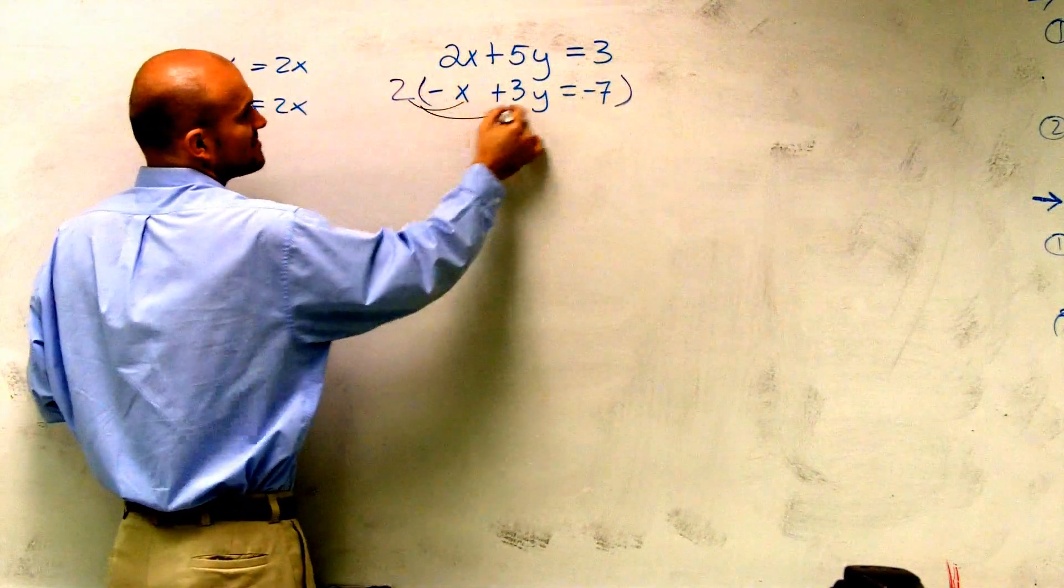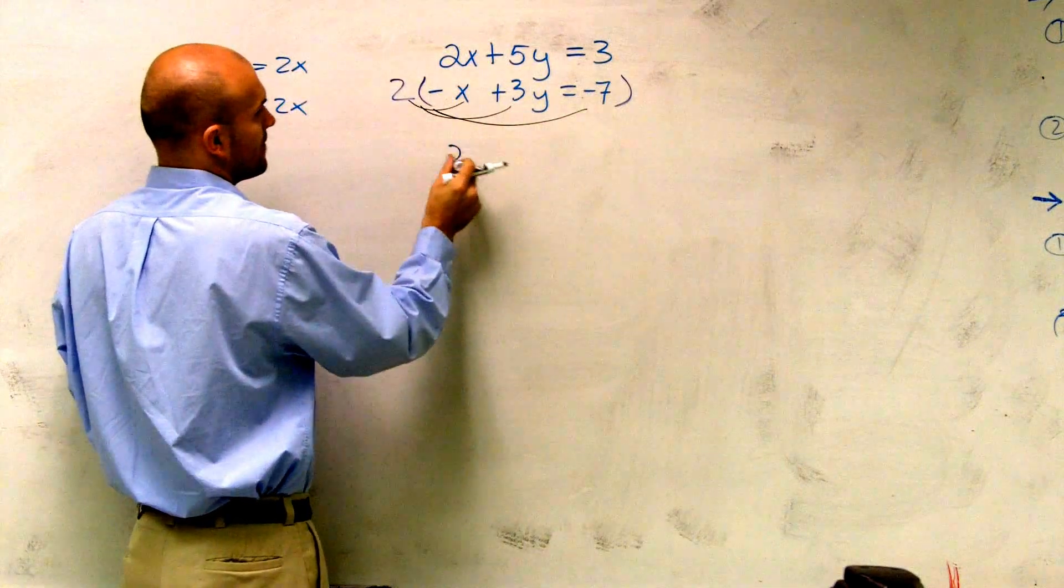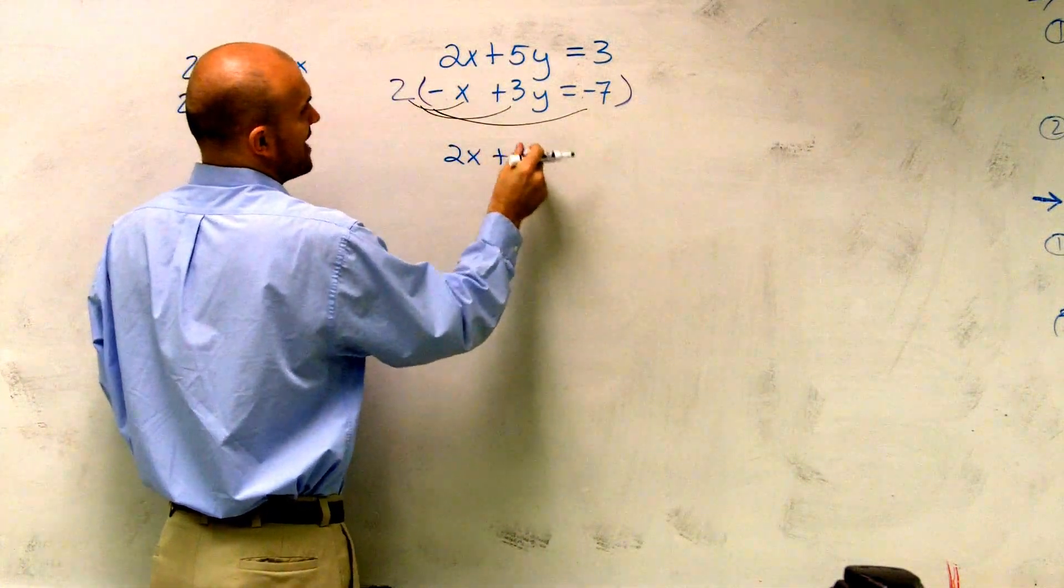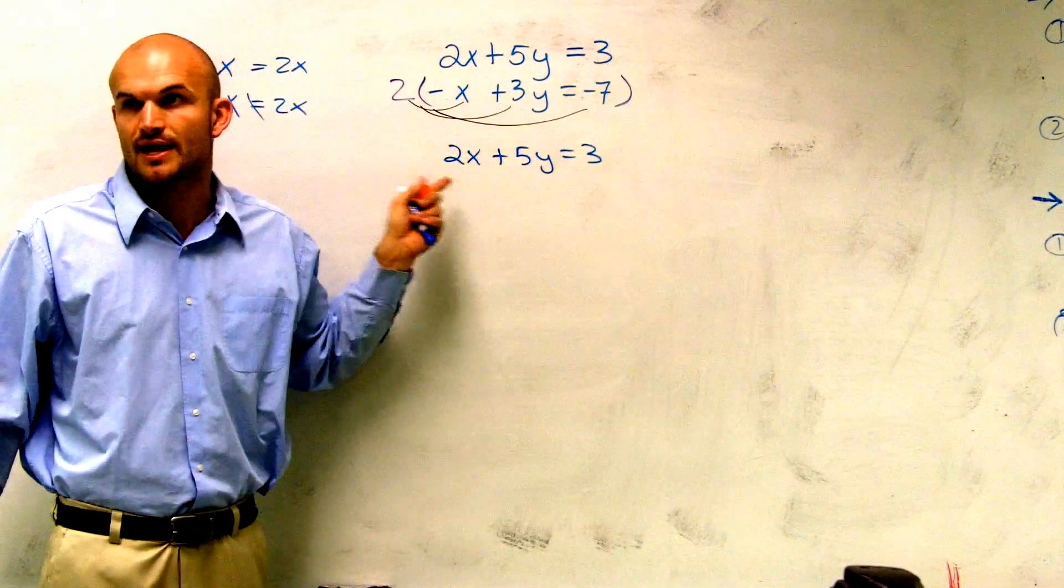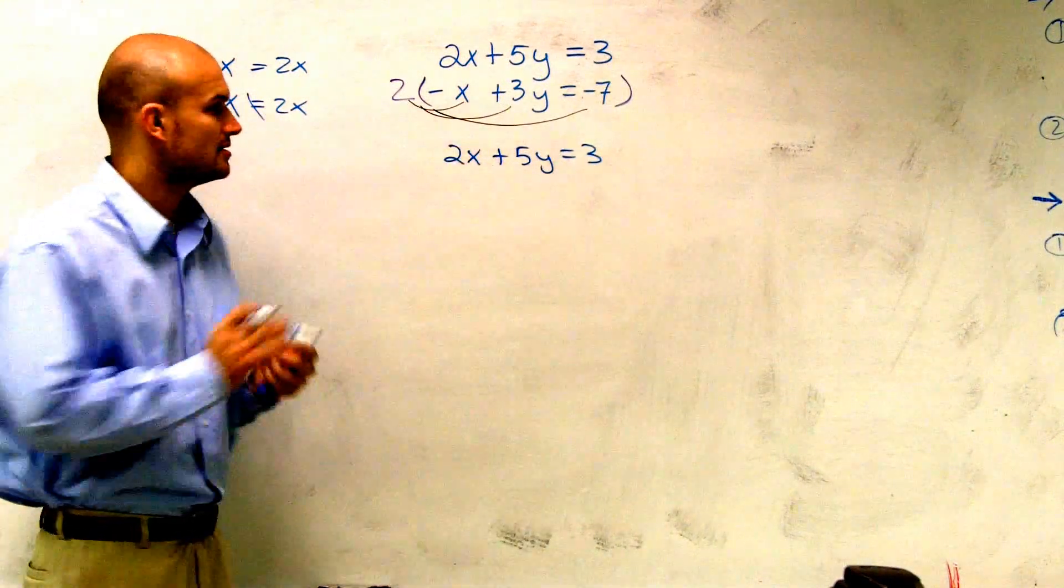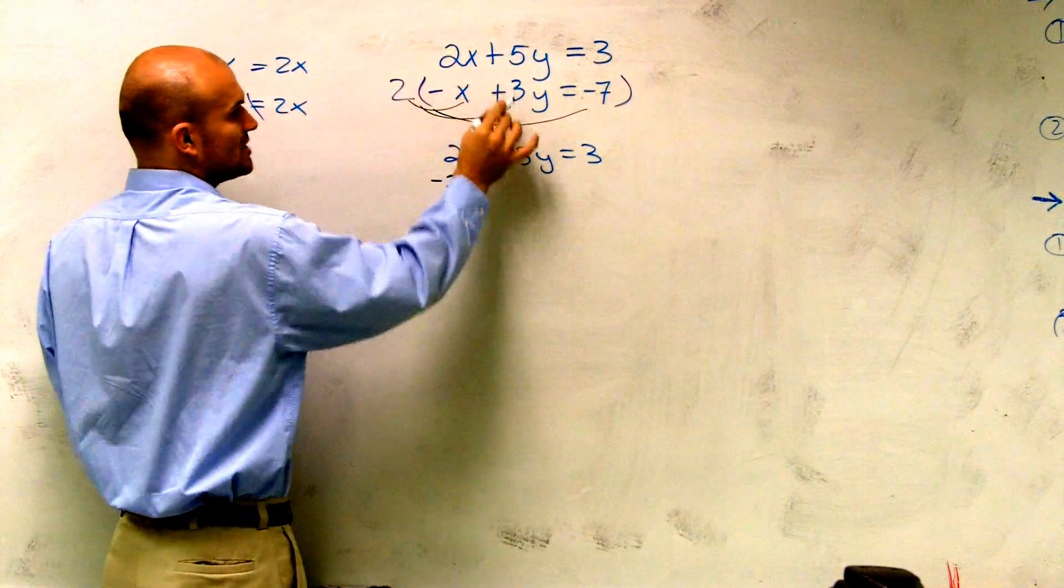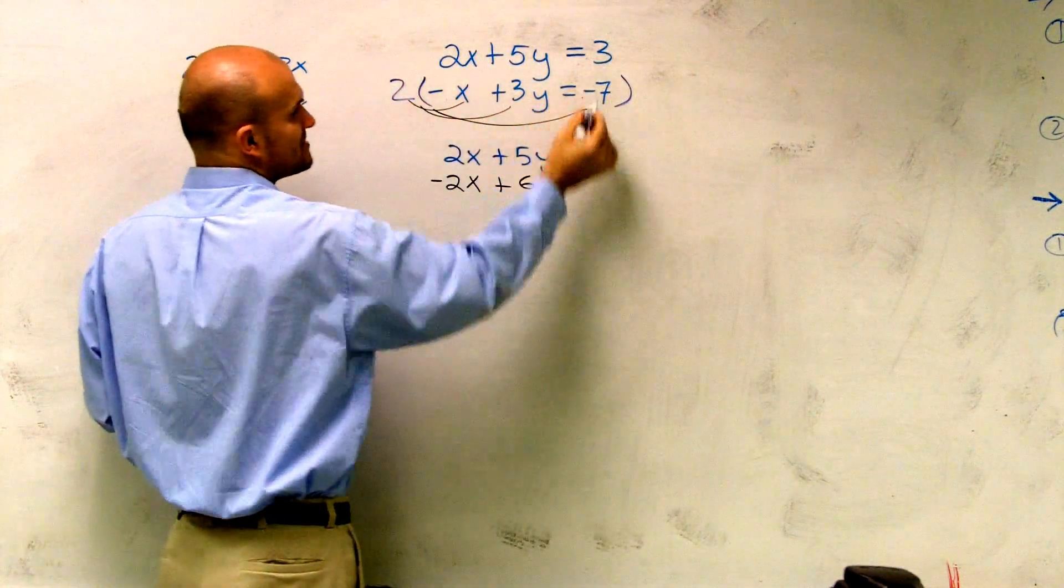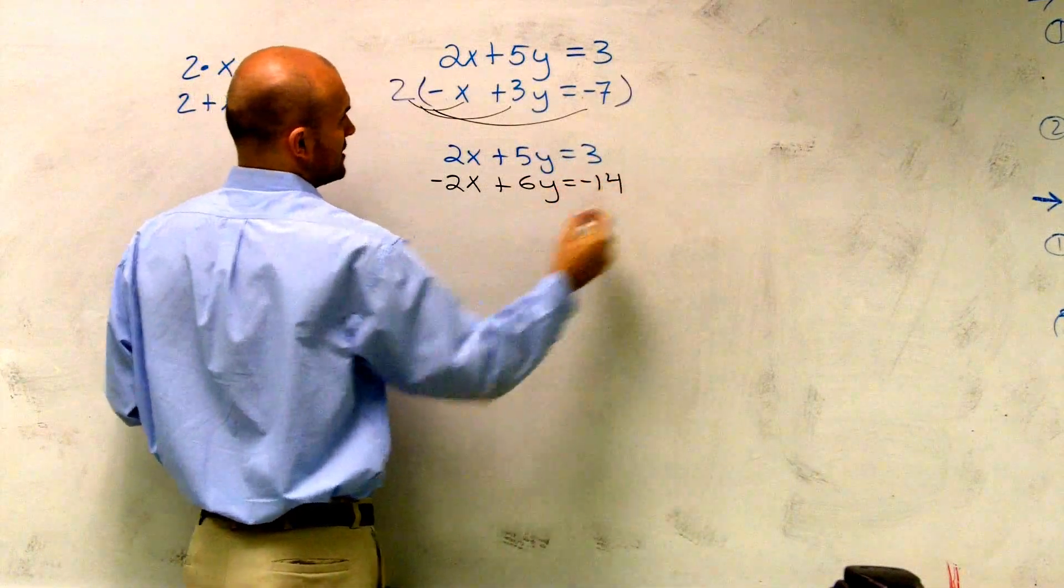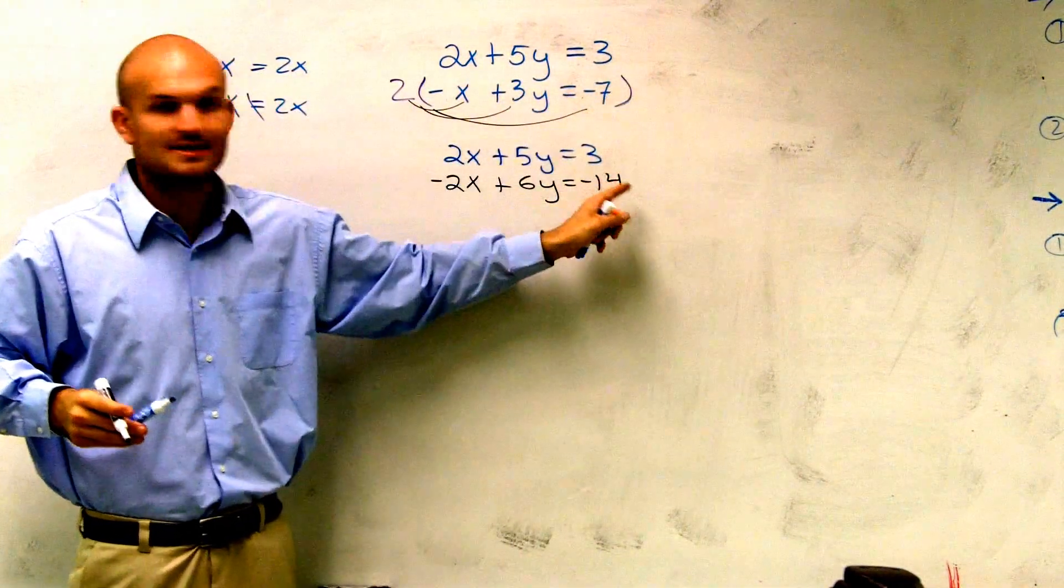So I'm going to multiply 2 times all of these values. So I'll still have 2x plus 5y equals 3. The top equation is unchanged. You don't need to do anything to that. It's unchanged. The bottom equation, though, now becomes a negative 2x. 2 times 3 is going to be a 6y. 2 times negative 7 equals a negative 14. So has everybody seen what I did? When I multiplied that out, I got this new equation.